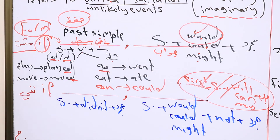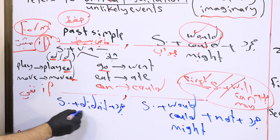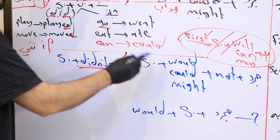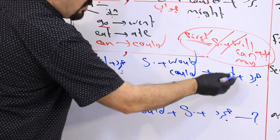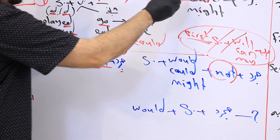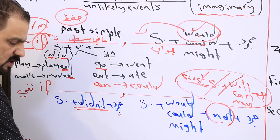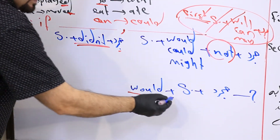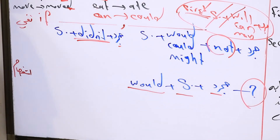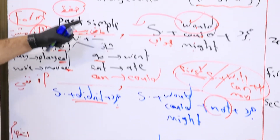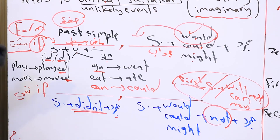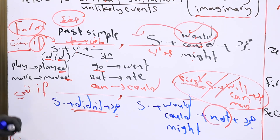In the negative: subject + didn't + bare infinitive (if-clause), and subject + would/could/might + not + bare infinitive (result clause). In the interrogative: would/could/might + subject + bare infinitive + question mark. These are the three cases — affirmative, negative, interrogative — you must memorize all three for the second conditional.